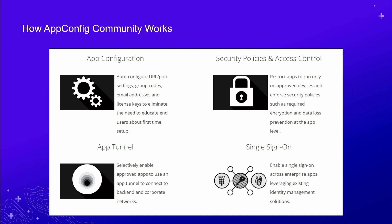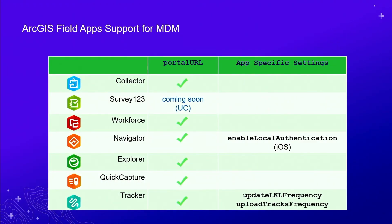Let's look at what the ArcGIS field apps actually support. On this slide we have a simple table with the seven ArcGIS field apps on the left and two columns: one called Portal URL — a key implementation that all of the ArcGIS field apps currently support, with Survey123 coming online very soon — and a column on the right for specific app settings that Navigator and Tracker uniquely support. I'll go over these over the next couple of slides.